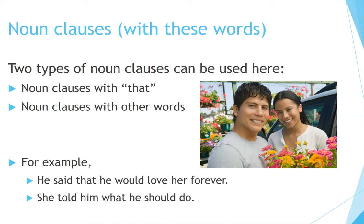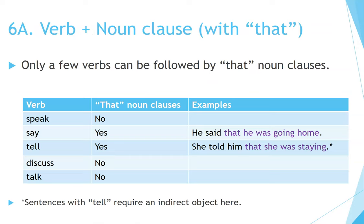Noun clauses with these words. Two types of noun clauses can be used: noun clauses with 'that' or noun clauses with other words. For example: He said that he would love her forever. She told him what he should do. Section 6a: Verb plus noun clause with 'that.' Only a few verbs can be followed by 'that' noun clauses. Say — yes: He said that he was going home. Tell — yes: She told him that she was staying. Speak and discuss and talk — no. Sentences with 'tell' require an indirect object here.